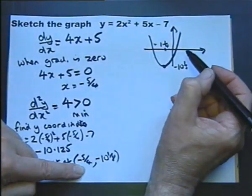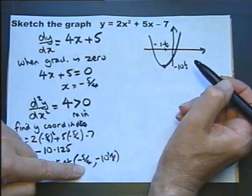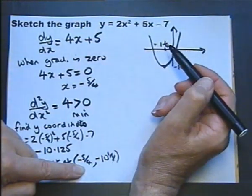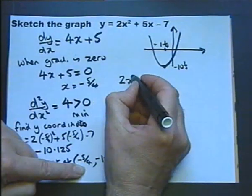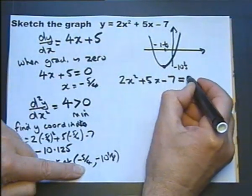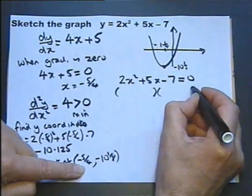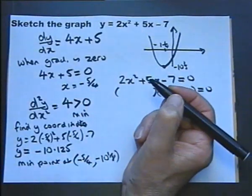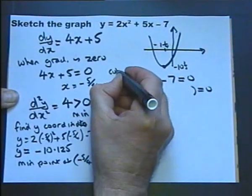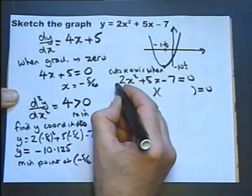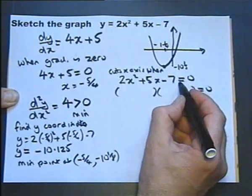We can also find where it cuts the x axis to improve the sketch by putting that equal to 0 and factorizing it. Let's do that. I should put some words of explanation of what I'm doing, shouldn't I? Cuts x axis when... That's better. Cuts x axis when the equation comes to 0.